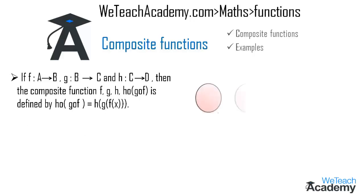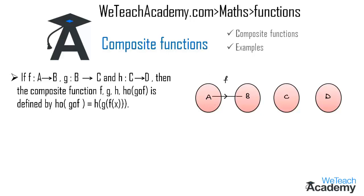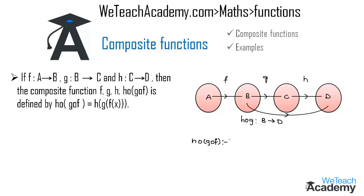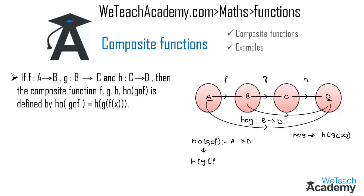Let us consider four Venn diagrams A, B, C, and D. Here f is a mapping from A to B, g is a mapping from B to C, and h is a mapping from C to D. The composite function h∘g is a mapping from B to D, and h∘g∘f is a mapping from A to D. So h∘g(x) = h(g(x)) and h∘g∘f(x) = h(g(f(x))).